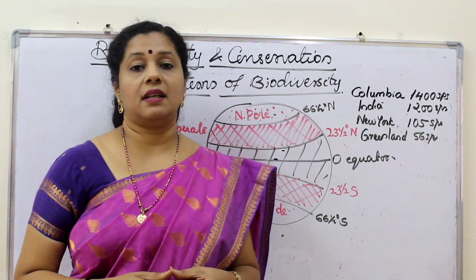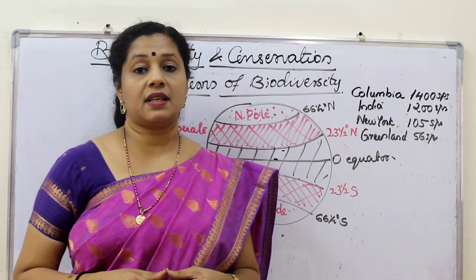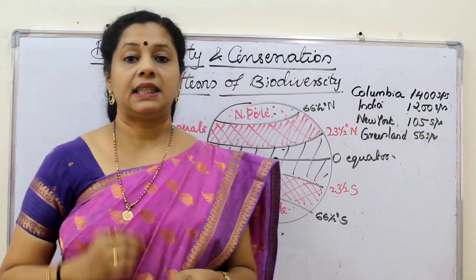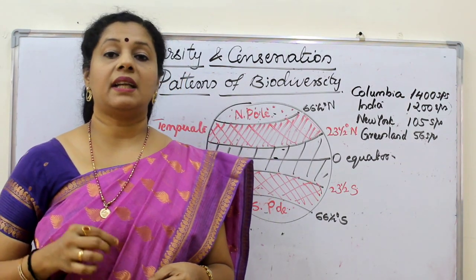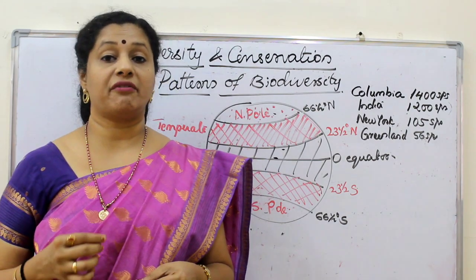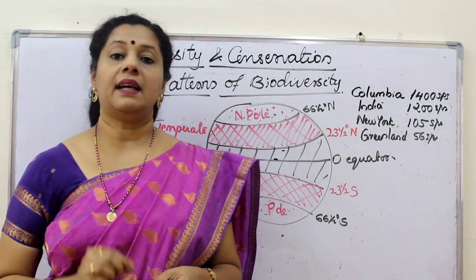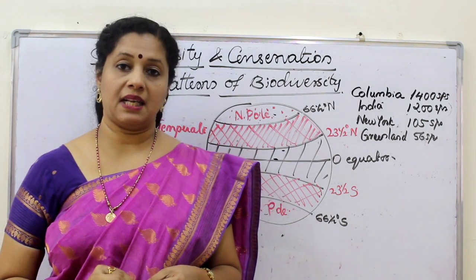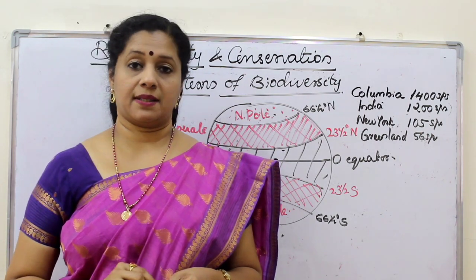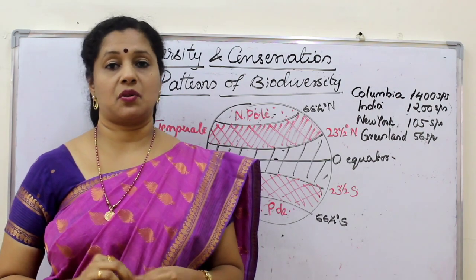In the tropical region, we have the huge Amazon rainforest. Amazon rainforest has around 40,000 species of plants, 3,000 species of fishes, 1,300 species of birds, 427 species of mammals, 427 species of amphibians, 378 species of reptiles, and more than 1,25,000 varieties of invertebrates. Very high biodiversity is found in the Amazon region.